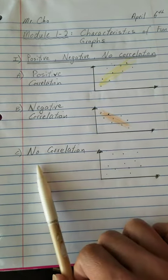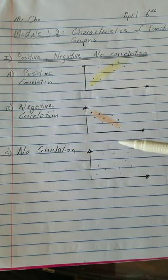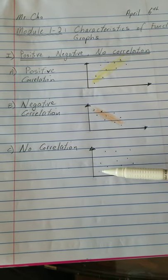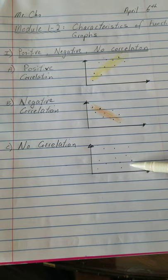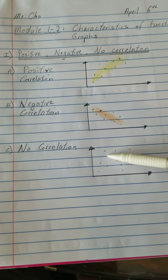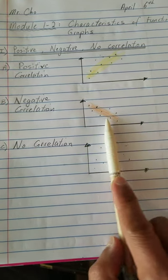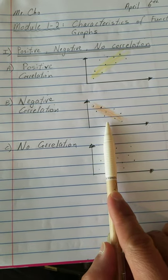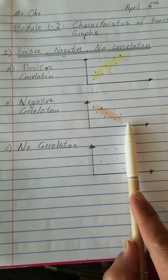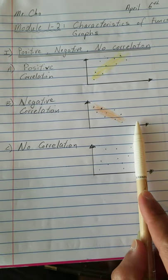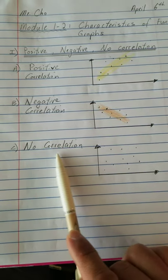With no correlation, we're looking at the dots on the graph randomly placed in different parts of the graph. So if you move from left to right with a pencil, there's no indication whether it's moving up or down. That's when you have no correlation.